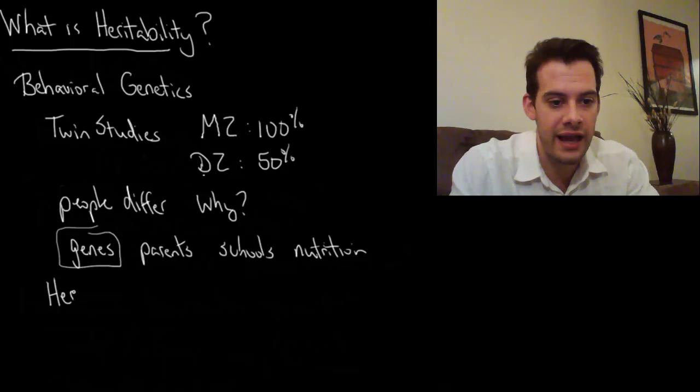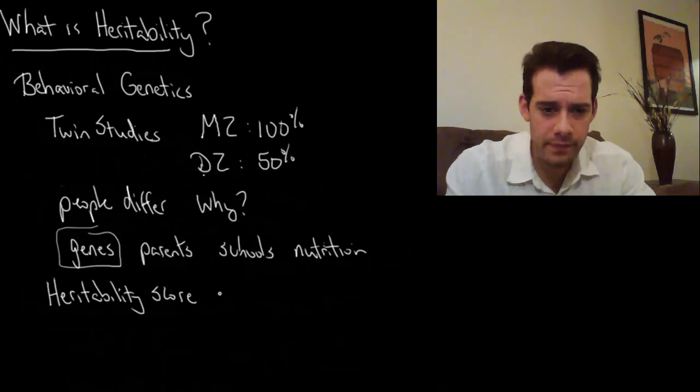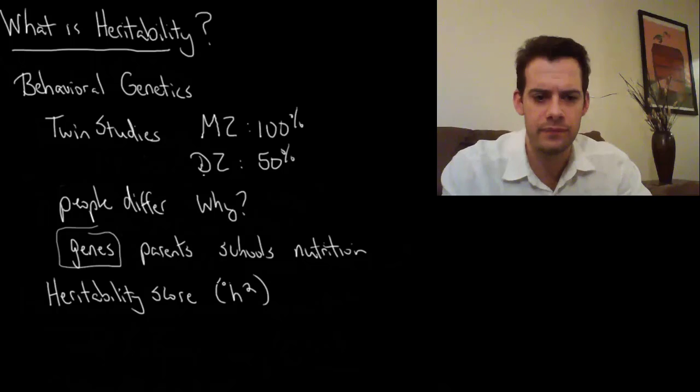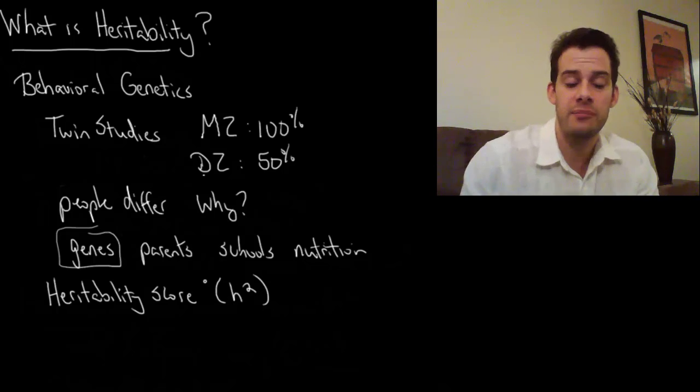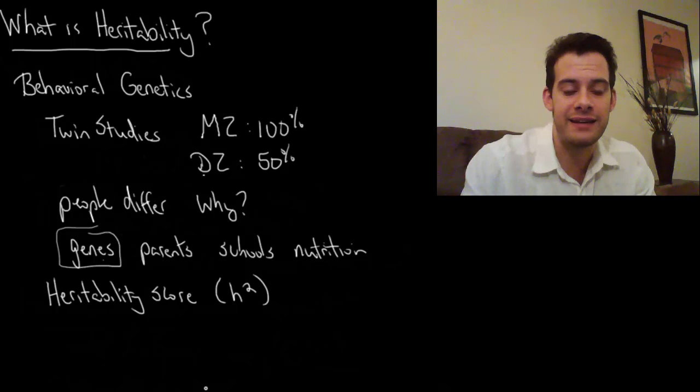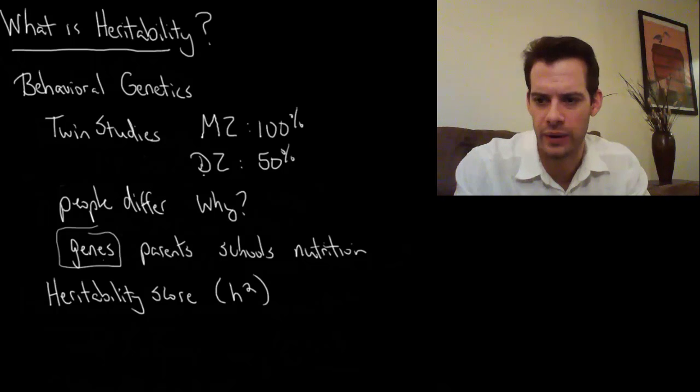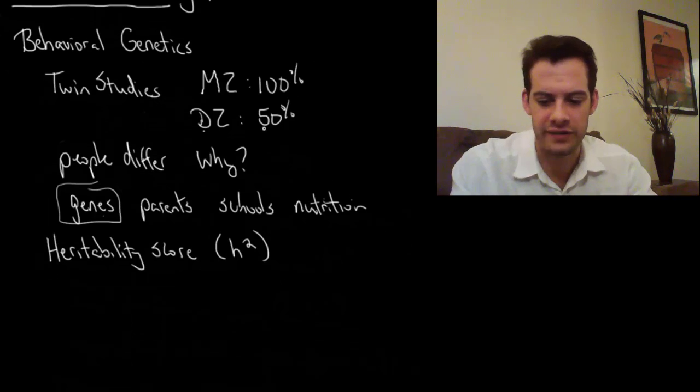So what is a heritability score? A heritability score uses the coefficient h squared. Heritability score says people differ and it tells us the strength of genes in explaining that difference.